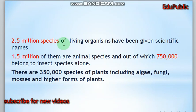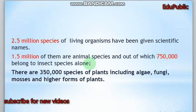2.5 million species of living organisms have been given scientific names. Out of these, 1.5 million species are animals, and out of this 1.5 million species of animals, 750,000 belong to the insect species alone. 350,000 species of plants include algae, fungi, mosses, and higher forms of plants.